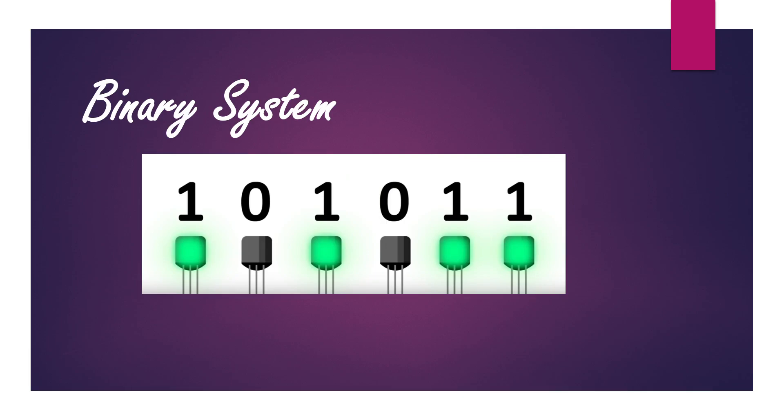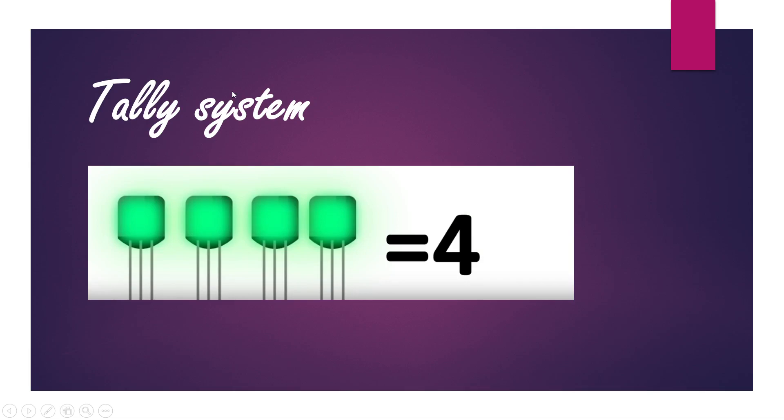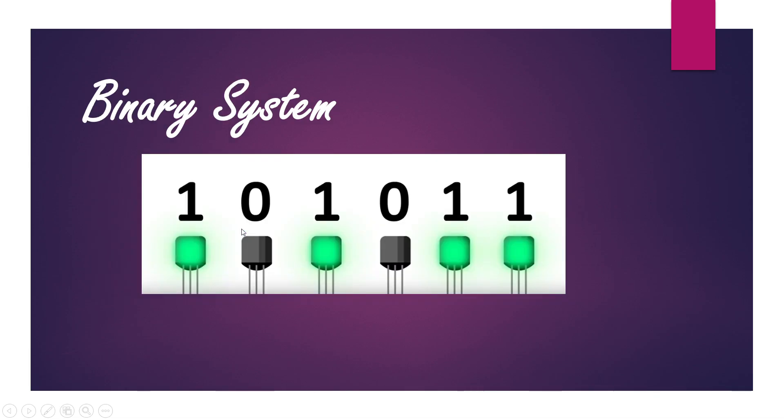But what about in binary system? In case of tally system, 1 means 1, 2, 3 and 4. But in binary system, this is the power of 2, the base of 2. It's not simply 1. It is 2 raised to power 0, this position 2 raised to power 1, and look at this number: 1, 2, 3, 4, 5 and 6. It's 2 raised to power 5.